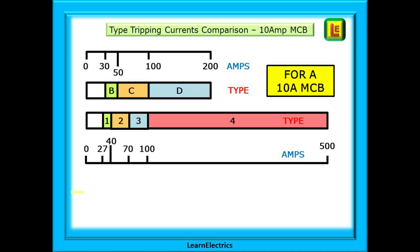For a C type the same 10 amp MCB will think about tripping with a fault current between 50 and 100 amps. At 100 amps it will definitely have tripped. That is to say 10 times 10 amps is 100 amps. And the 10 amp D type between 100 and 200 amps. 10 amps times 20 is 200 amps.